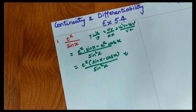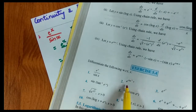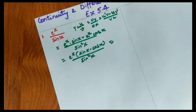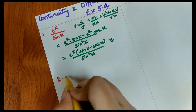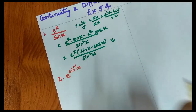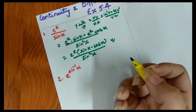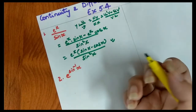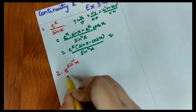Now the second question: we have e to the power sine inverse x. Let's do the differentiation. Since this is a composite function, we will apply the chain rule.